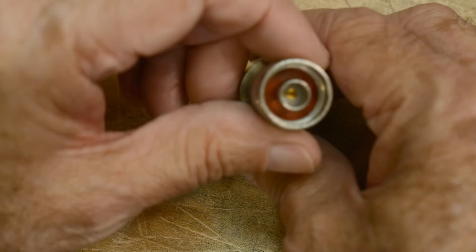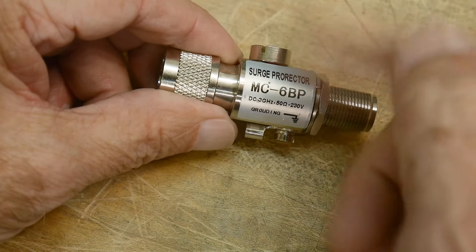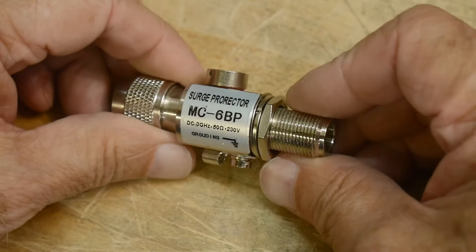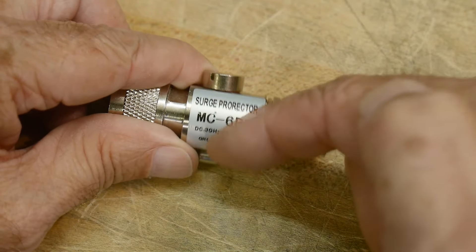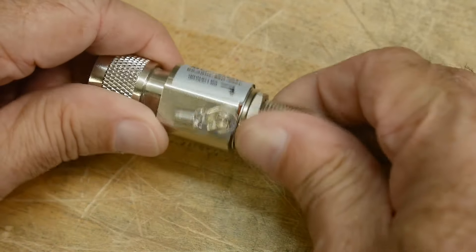And it's just an N connector, a pass-through N connector, and it's got some stuff inside so that if you get high voltage, like an electrical arc, it will ground itself. There's like a spark gap in here and you'll get a jump on the ground.